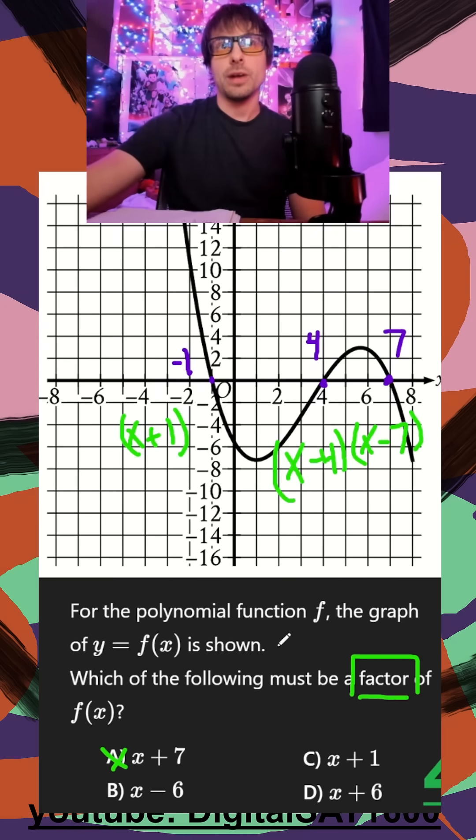x plus seven is not correct because we want x minus seven. Six isn't in it either way. I see my x plus one, so we know it's going to be c, and I know it's not going to be d. So that's our final answer.